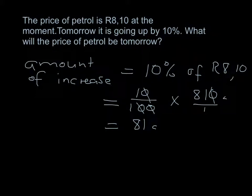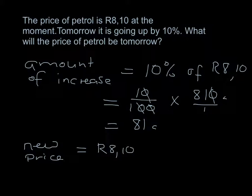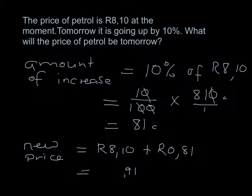The new price: petrol was 8 Rand 10 cents, and now we add 81 cents. 81 cents written in rands is R0.81. Adding: 10 cents plus 81 cents gives 91 cents, so the new price will be 8 Rand 91. The amount it increased by was 81 cents, and the new price is 8 Rand 91.